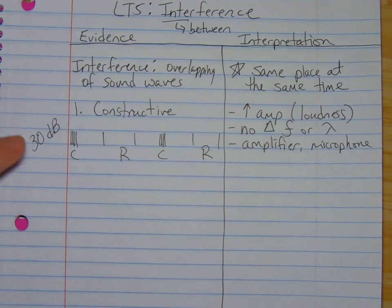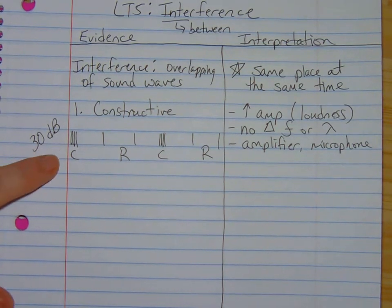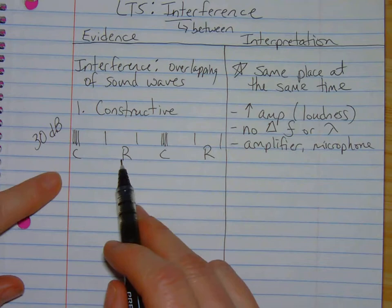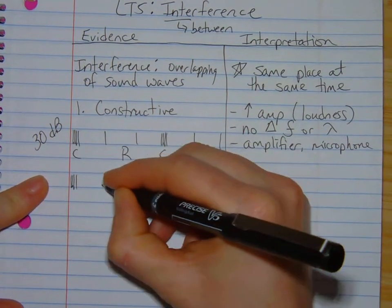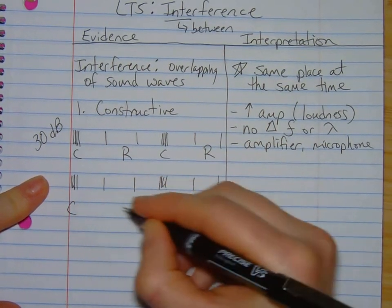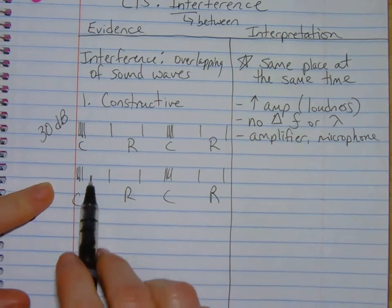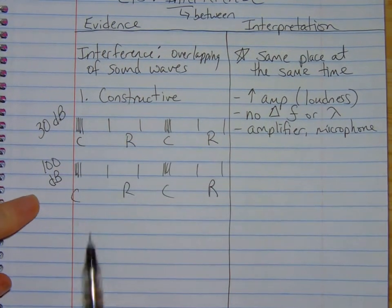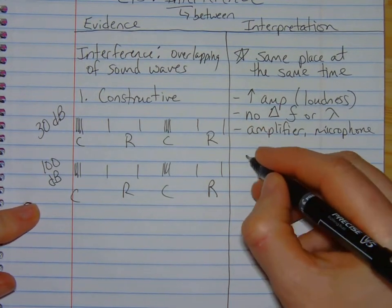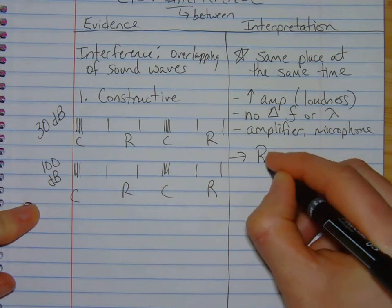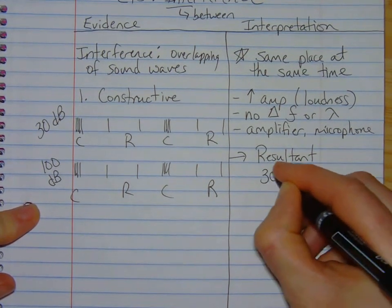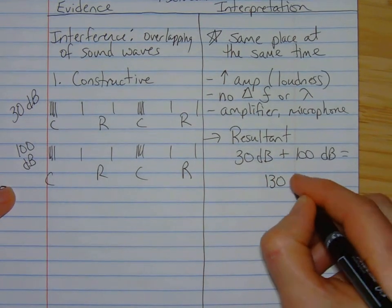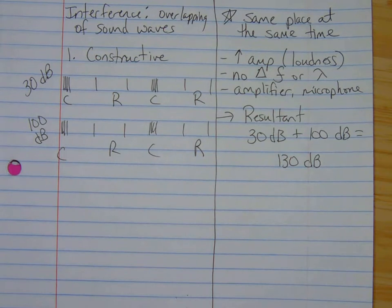So what this technology does is it takes a compression that is generated. So somebody's up there singing, they're generating compressions and rarefactions. And they match it with another wave with the exact same frequency. And it would be lined up perfectly. So this one would be generated by the amplifier. And we know there's a volume control. So maybe we set that volume to 100 decibels. That means the resultant wave, that's the one the audience is going to hear, we'll call it the resultant, would be 30 decibels plus the 100 decibels from the amplifier, which means that person on stage would appear to be singing at 130 decibels.